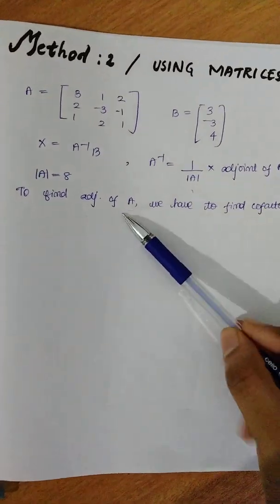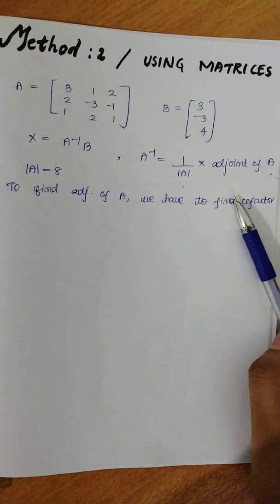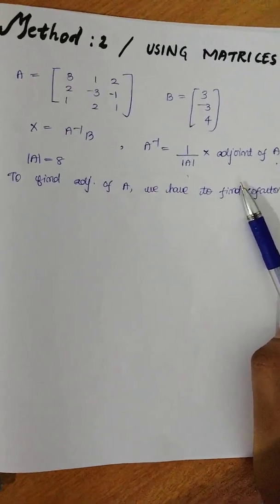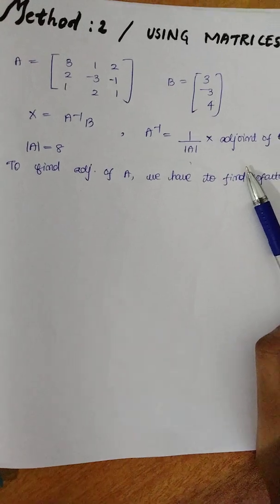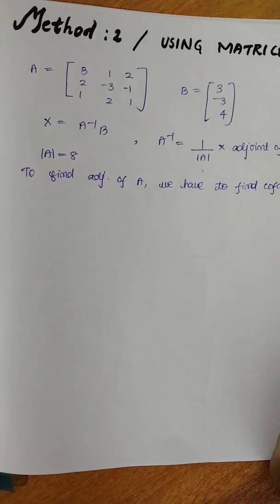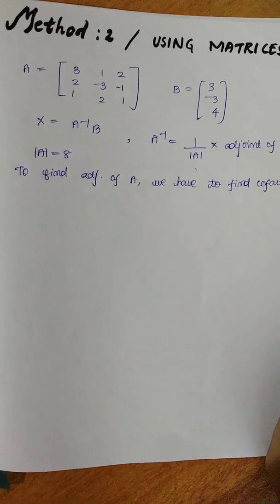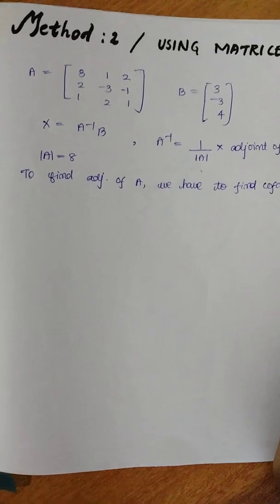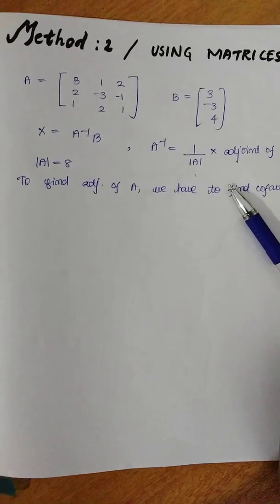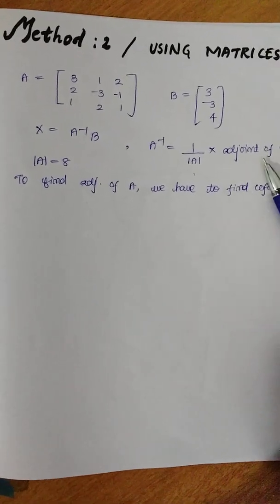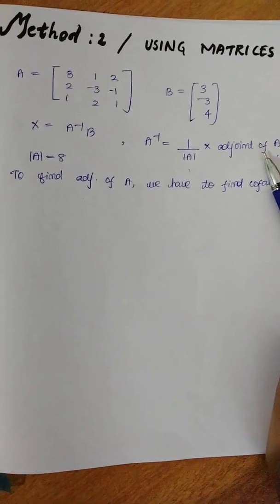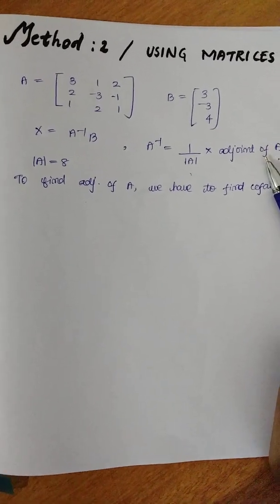To find the adjoint of A, we need to find the cofactor of A. We can do cofactor of A — I am going to do cofactor of A.